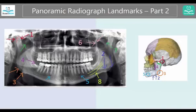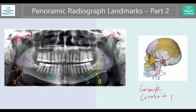Number one is this guy over here — this protruded, rounded part. This is either the condyle or the coronoid process. Which one do you think it is? The answer is the condyle. The condyle is the area that rubs against the temporal bone, and together they form the TMJ.